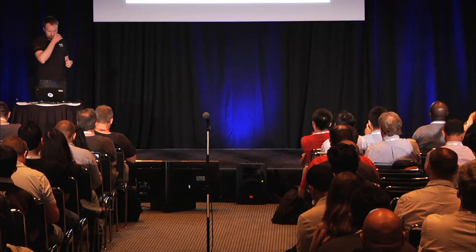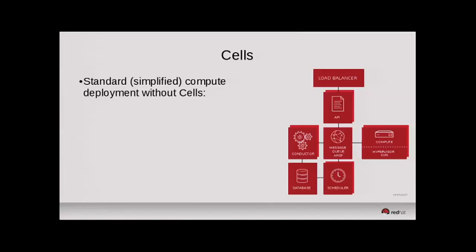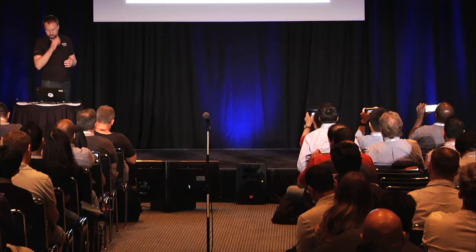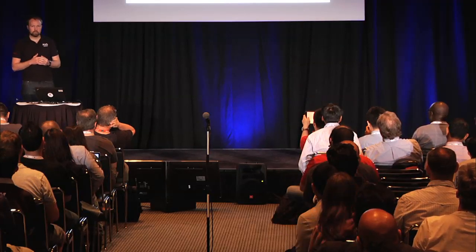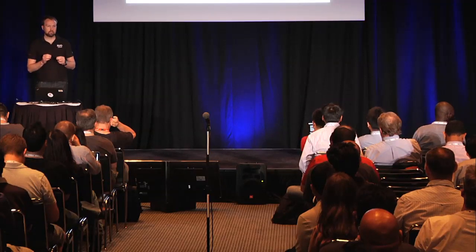Talking about cells, which came into OpenStack in the Grizzly release and have gradually improved since. Here we have the basic compute architecture: a load balancer in front of the APIs, multiple API instances, multiple conductors, multiple schedulers, multiple compute nodes, a message queue, and a database. At some point, particularly once we approach tens of thousands of nodes, we start to see stress on the message queue and the database. Cells originally came about as a way of alleviating that stress. One benefit over regions is that it provides a single compute endpoint — the user doesn't need to specify where their instance will run.